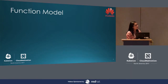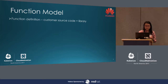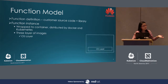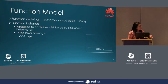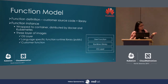To further understand how Function Stage works, we need to know how a function is modeled. The definition of a function is combined by two parts: customer resources and dependent libraries. The actual function instance running in Huawei Cloud is hosted by a container. The container has three layers of images: an OS layer — in Function Stage this is a Huawei-certified CentOS, a variation of Red Hat Linux — and the publicly available language-specific runtime library developed by our serverless platform, and the customer function itself.